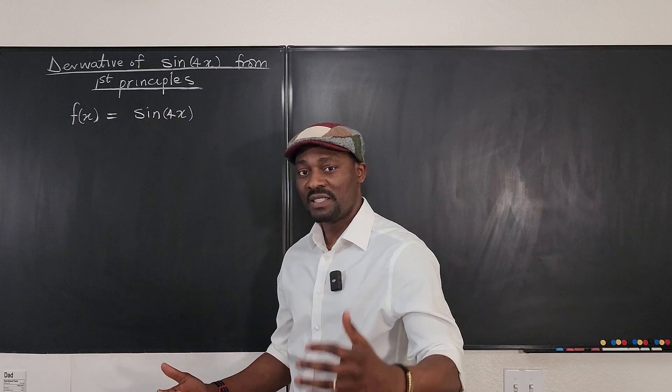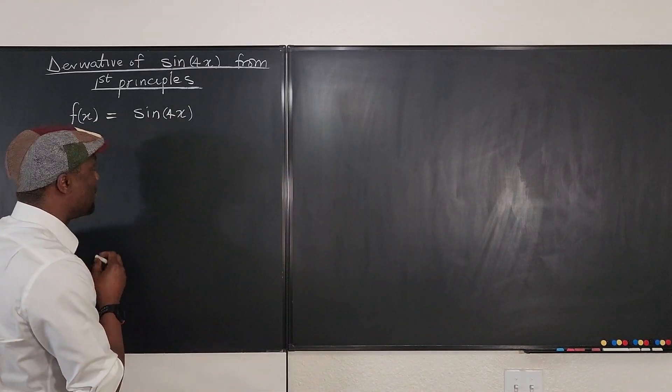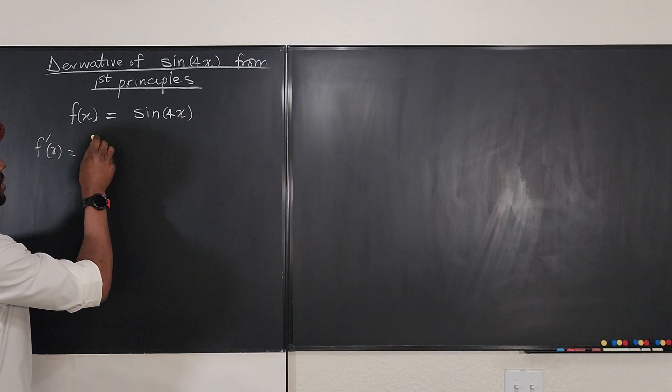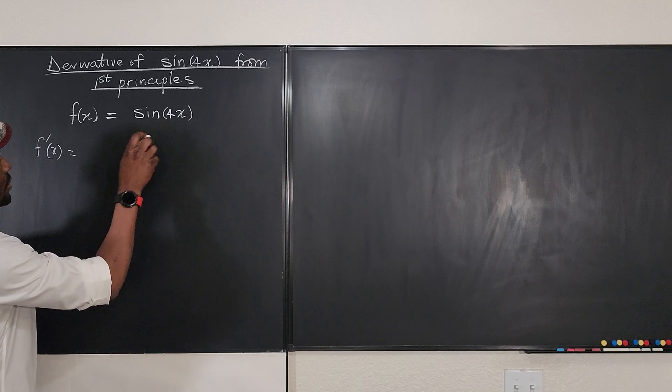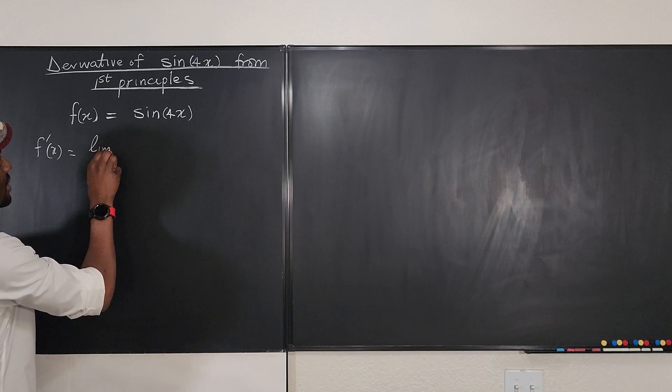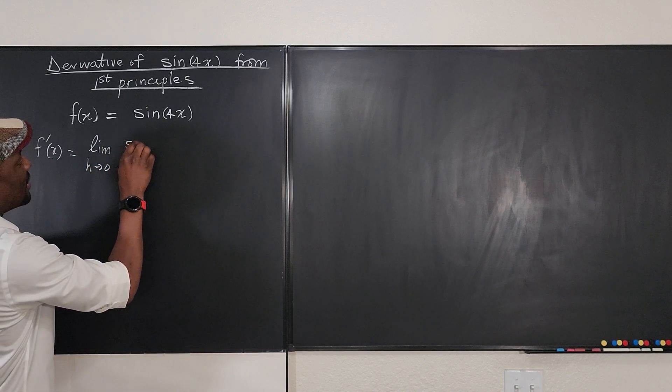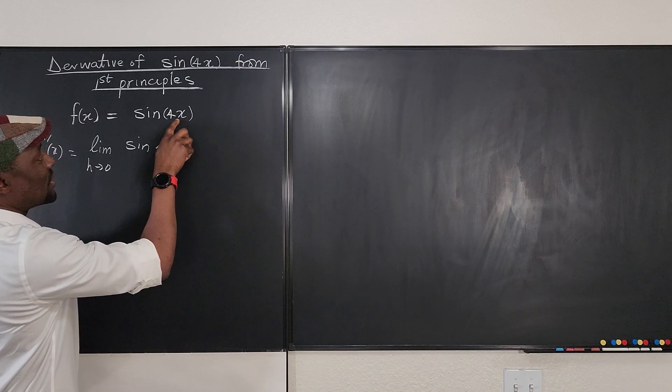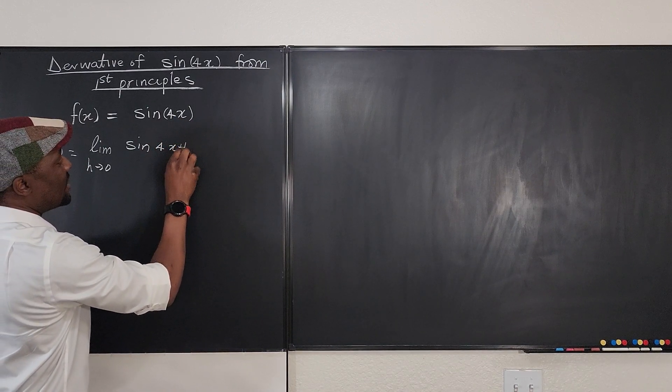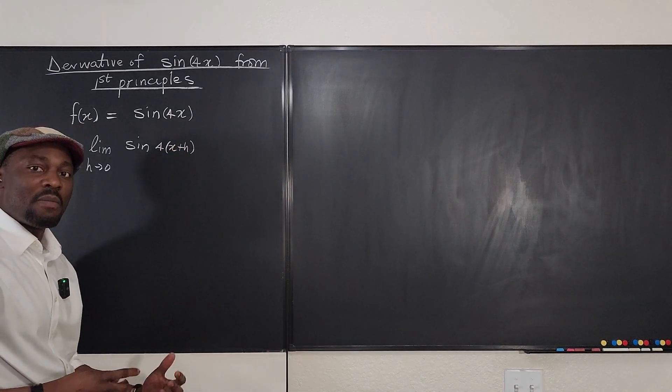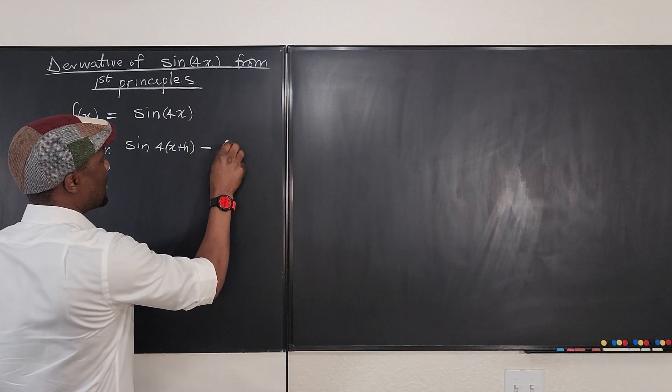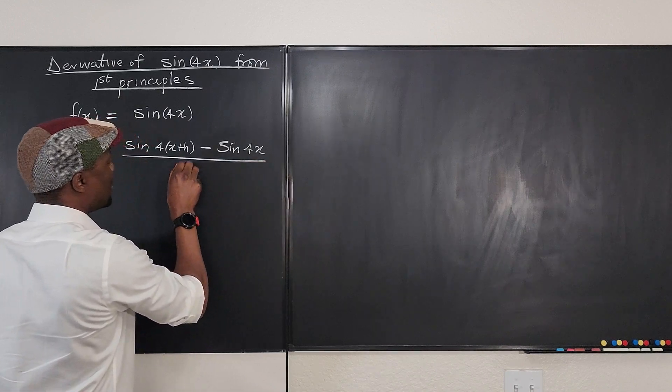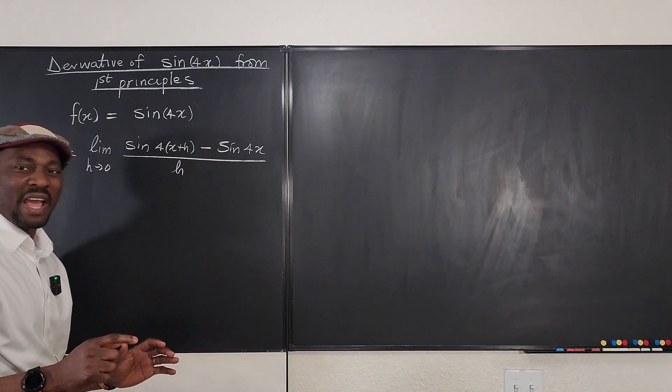So, the first thing we start with is the definition of any derivative from first principles. And that's going to be f'(x). It's simply going to be, in this case, the limit as h goes to 0 of the sine of, instead of us having just 4x, it's going to be 4x plus h. Remember, we always add h to x whenever we do this minus the sine of just 4x divided by h. So, this is how you write it. You just add h to x at every point.